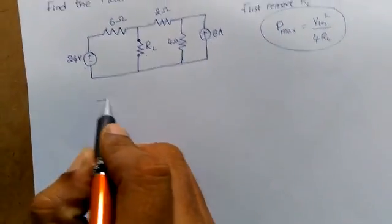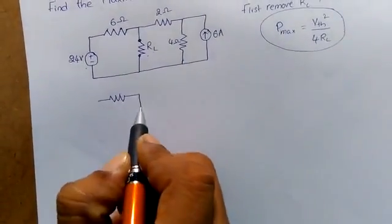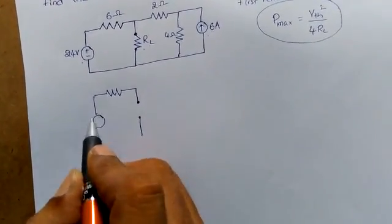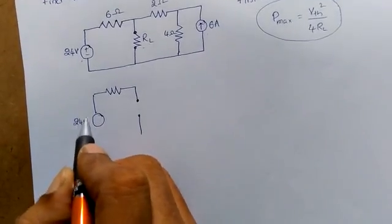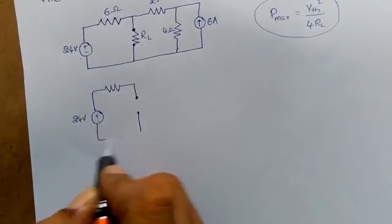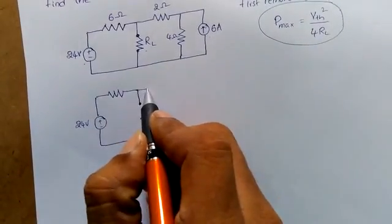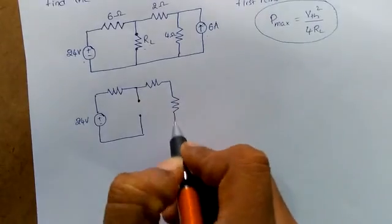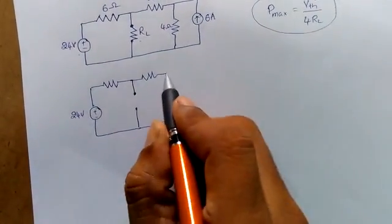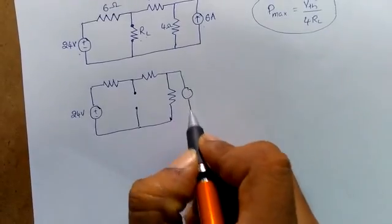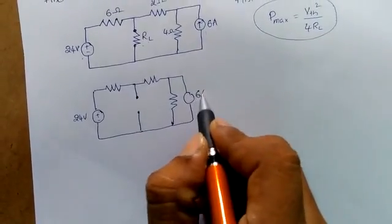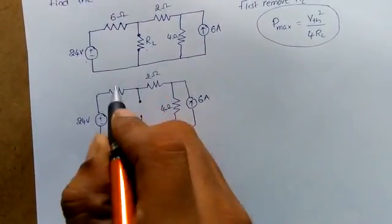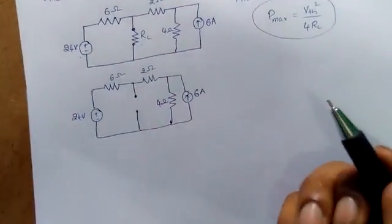The first step is removing RL. So we remove RL — the 24 volts source remains the same. Here, 2 ohms is in the same place, 4 ohms is also in the same place, and the 6 amperes current source is also in the same place. So the circuit now has 4 ohms, 2 ohms, and 6 ohms.